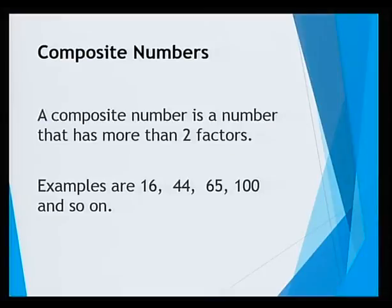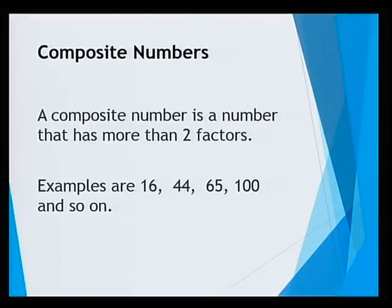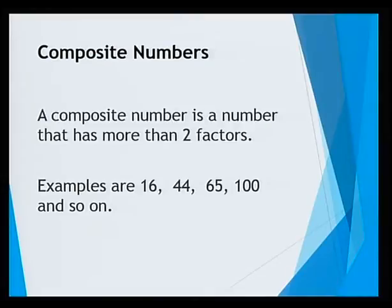We are now going to move to composite numbers. A composite number is a number that has more than two factors. Remember, prime numbers have only two factors, whereas composite numbers will have more than two factors. Some examples are 16, which is 1 times 16, 2 times 8, or 4 times 4. 44 is also an example of a composite number — we have 1 times 44, 2 times 22, and so on.